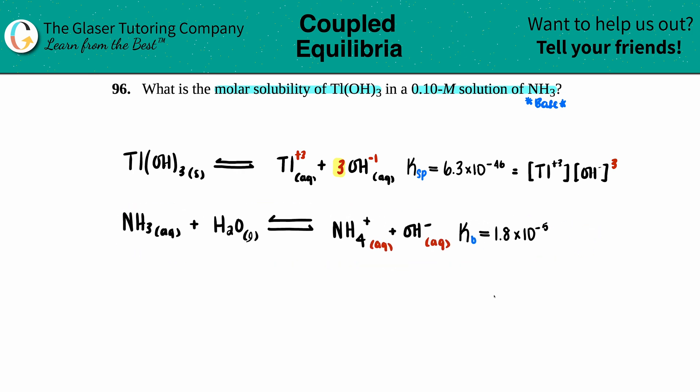So I'm just going to bring the Kb expression over here and just quickly write the Kb expression. The 1.8 × 10⁻⁵ will equal something divided by something. It's the two aqueous products divided by reactants, right? So it's going to be the [NH₄⁺] times the [OH⁻] divided by the [NH₃].